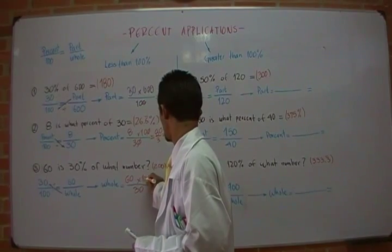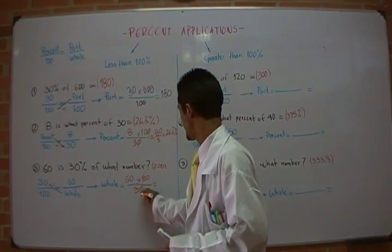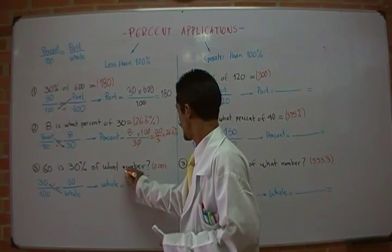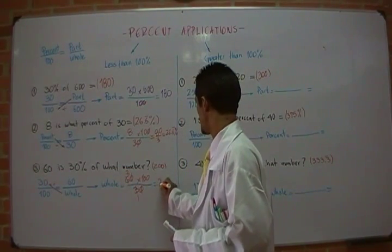So in this case, 60 times 100 divided by 30, I simplify here. 3 divided by 3 is 1, 6 divided by 3 is 2, and the result is 200.